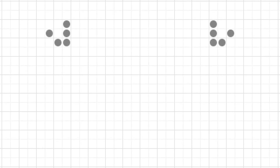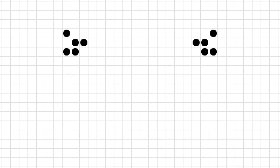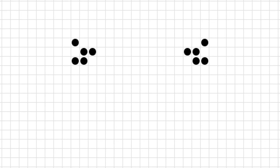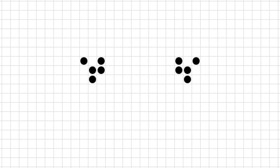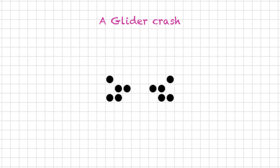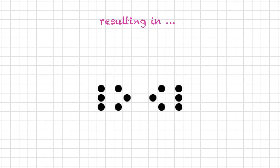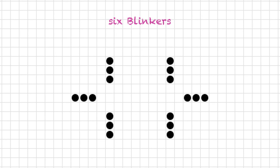So now I'm going to set up two gliders. If you imagine their direction of travel, you can see that what I've set up is a glider crash. And here's the result: six blinkers — beautifully symmetric.